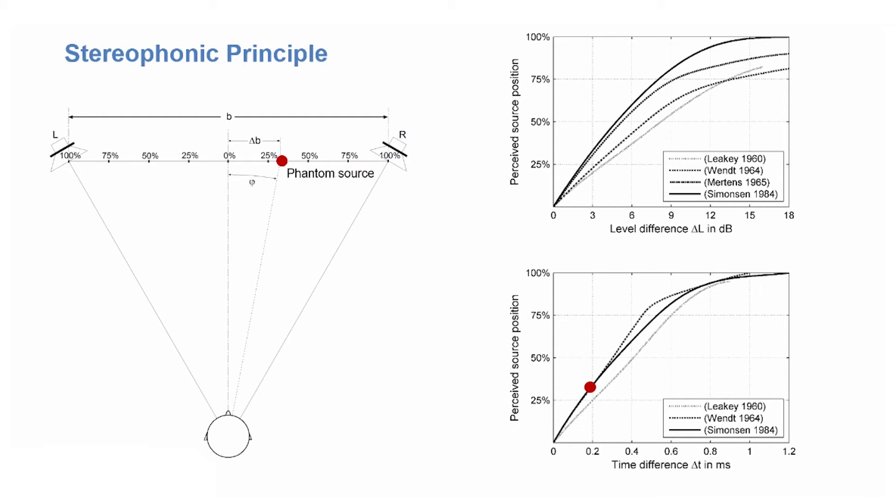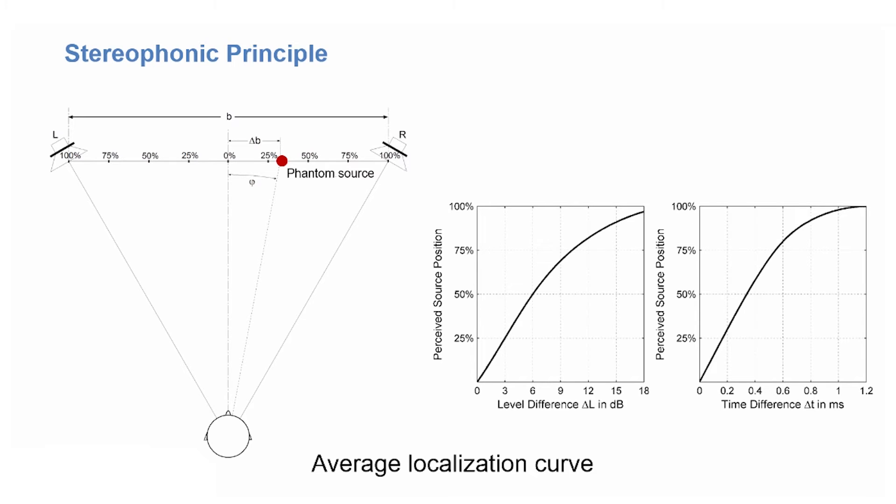The stereophonic localization curves are slightly different if you measure them with speech, with music or with artificial signals, as it has been done by the authors which are cited here. If you average them, you get something like this, an average localization curve.